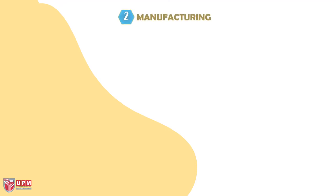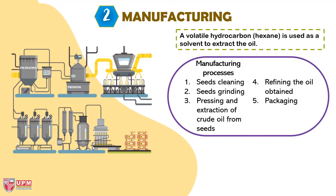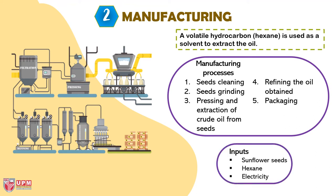The second stage is manufacturing. A volatile hydrocarbon called hexane is used as a solvent to extract the oil. The manufacturing processes involve seeds cleaning, seeds grinding, pressing and extraction of oil from seeds, refining the oil obtained, and packaging. The inputs are sunflower seeds, hexane, and electricity.